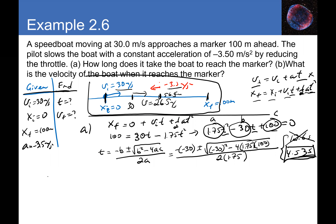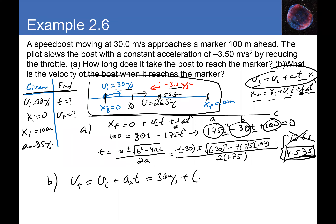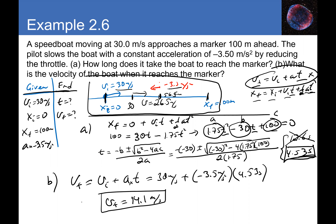For part (b), finding the velocity at the marker: using equation 1, v_final = v_initial + a·t = 30 + (−3.5)(4.53) = 14.1 meter per second. That's the velocity of the boat when it reaches the marker.